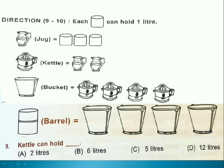Directions for 9 and 10. Each pot can hold 1 liter. Jug can hold 3 pots. One kettle can hold 2 jugs. Question 9. Kettle can hold... Answer is option B. As 1 jug is equal to 3 liters, 1 kettle will be 2 into 3 that is 6 liters.